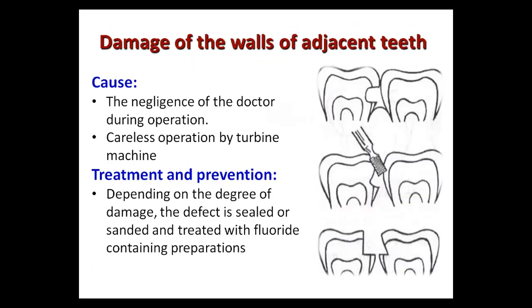The next error is damage to the walls of adjacent teeth during preparation. Causes include negligence of the doctor or careless operation of the turbine machine. Treatment and prevention depend on the degree of damage: the defect is sealed, sanded, or treated with fluoride-containing preparations.